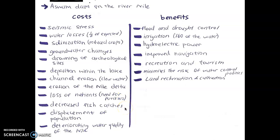Decreased fish catches — there is a decline in the fish population, which also has an effect on the fishery economy in Egypt. Displacement of the population — up to a hundred thousand people had to be removed in order to build the dam, because it sits within the floodplain and those people had to be moved.